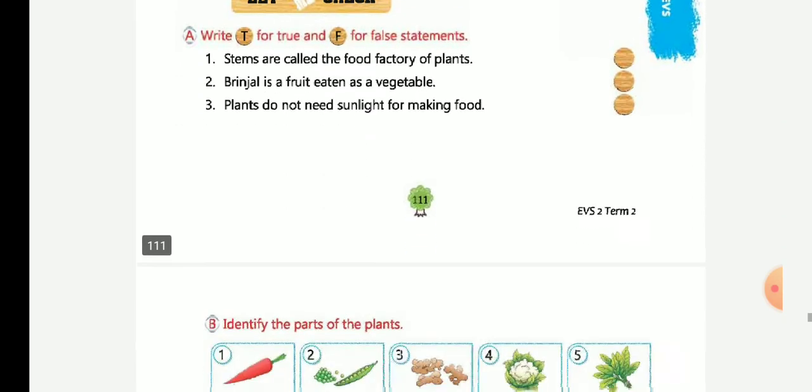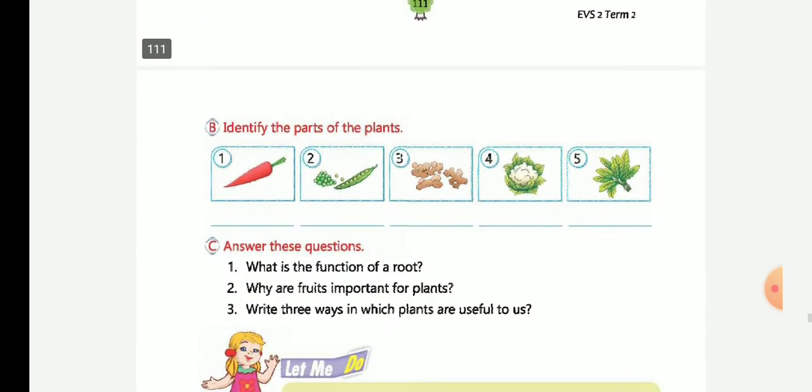Identify the parts of the plants. Now you have to look at some pictures and you have to identify which plant part. Carrot - root, very good. Peas - seeds. Ginger - stem, very good. Cauliflower - this type of flower, very good. Spinach - leaves, very good.